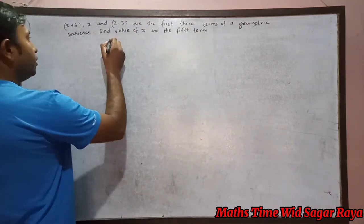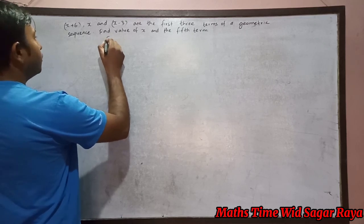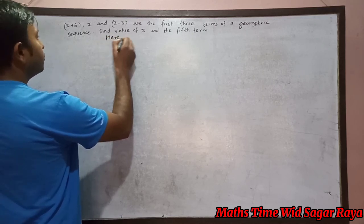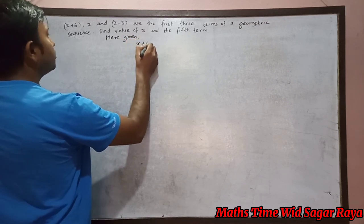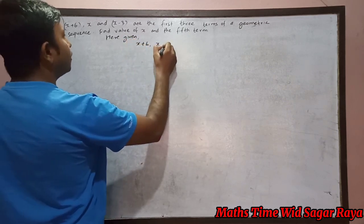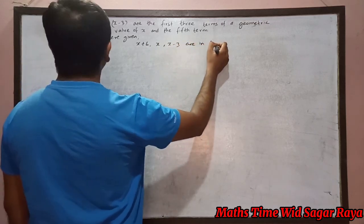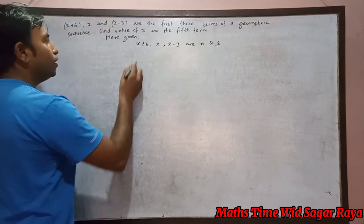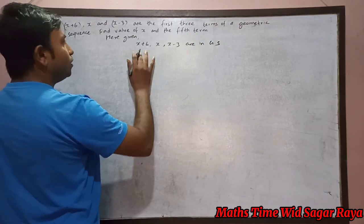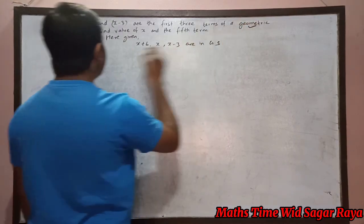Okay, so here you're given that x plus 6, x, and x minus 3 are the terms of a geometric sequence. In geometric sequence, we have common ratio.